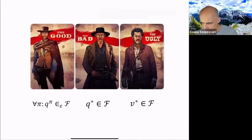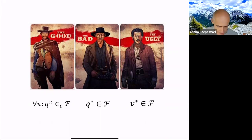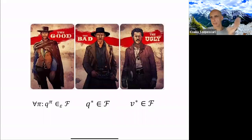Everyone's excited to see some results. We're going to have the good, the bad, and the ugly — three cases. The good case is an idealized case. That's the case when someone tells you: I designed these features and I promise they're good to capture the action value function of any of the policies up to some approximation error epsilon, measured in L-infinity norm. F is the function space induced by the features.